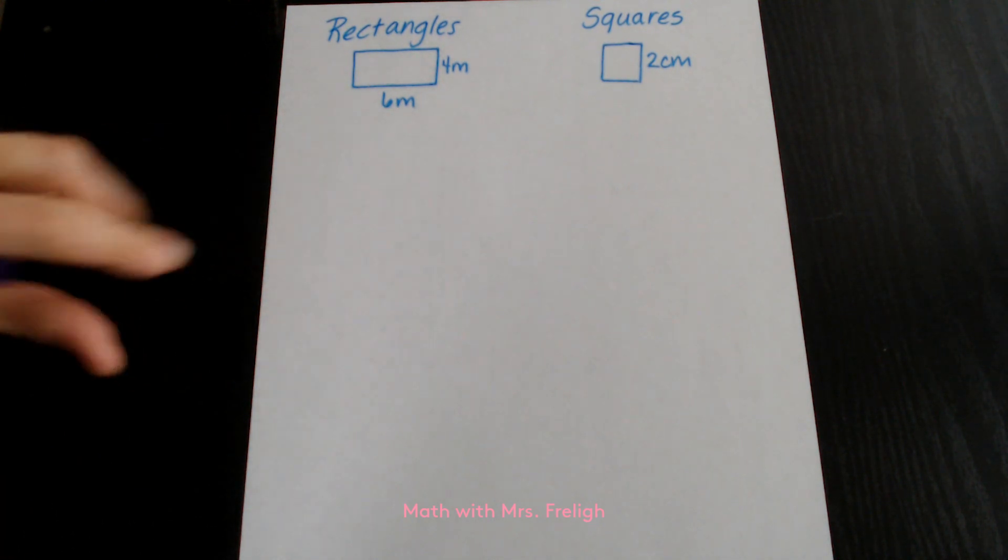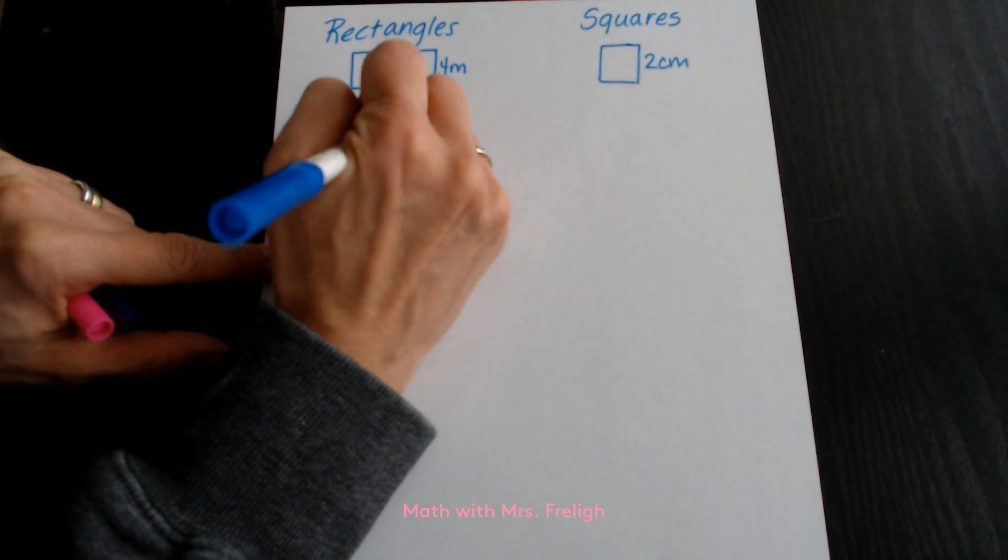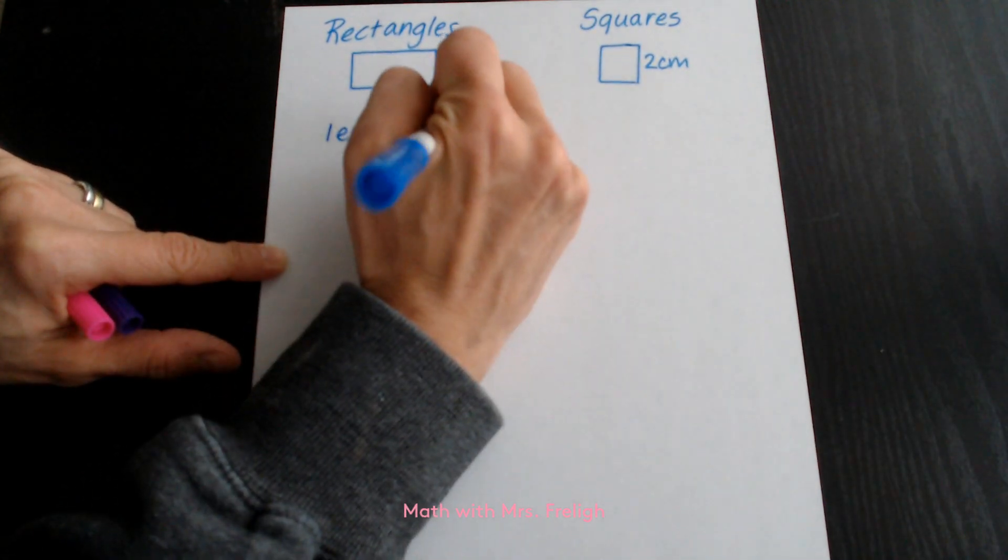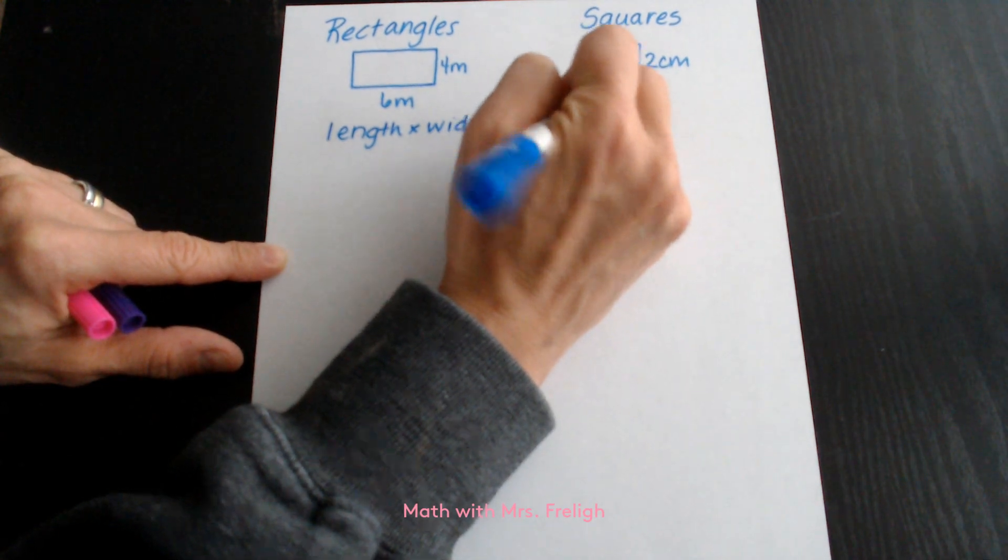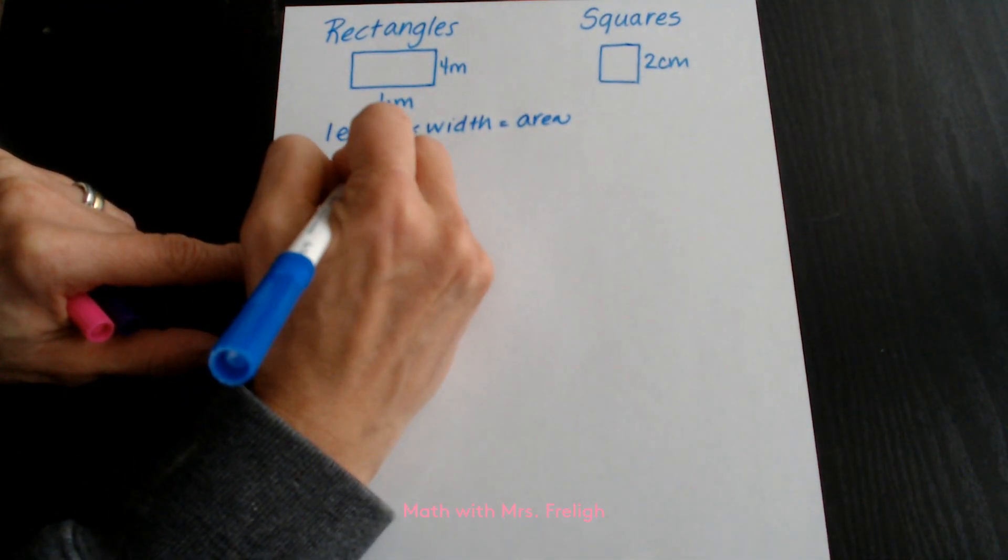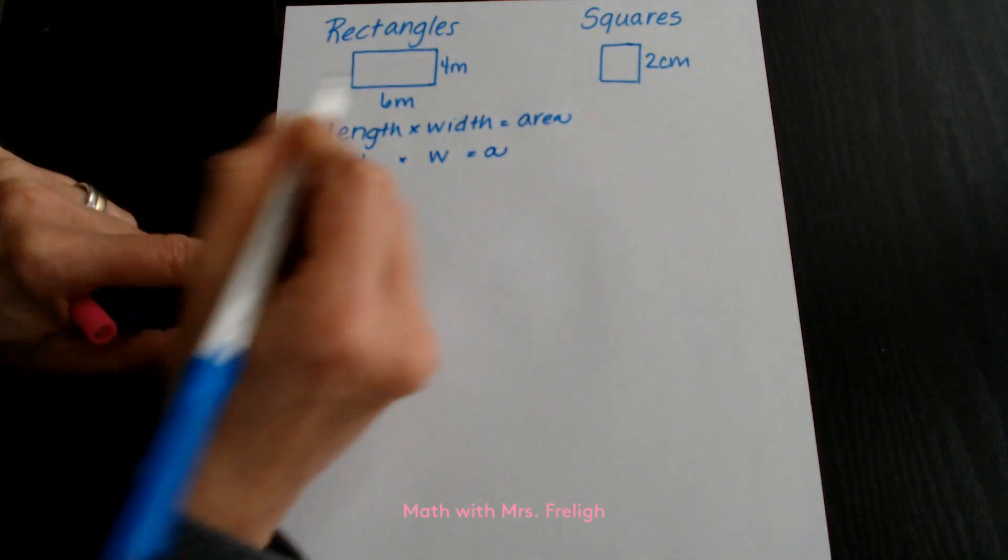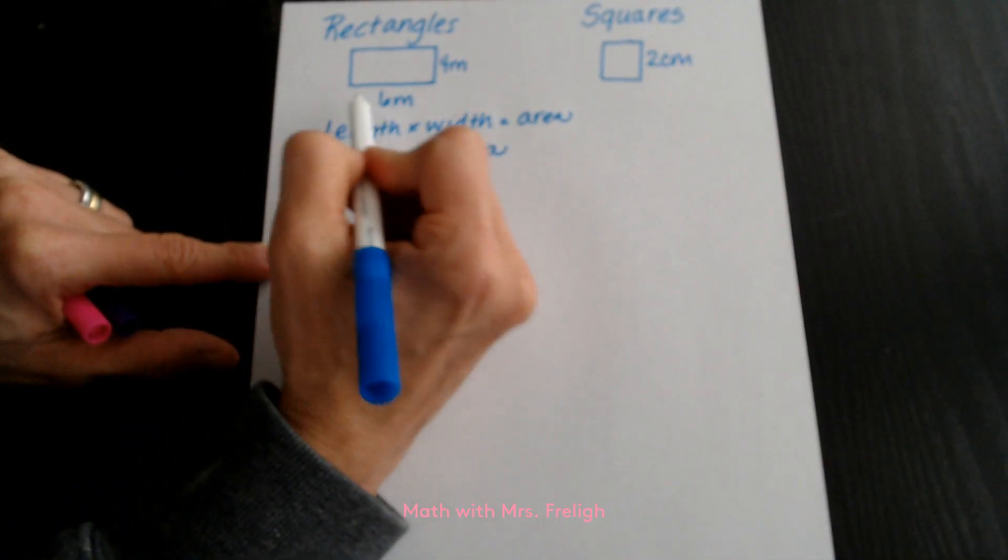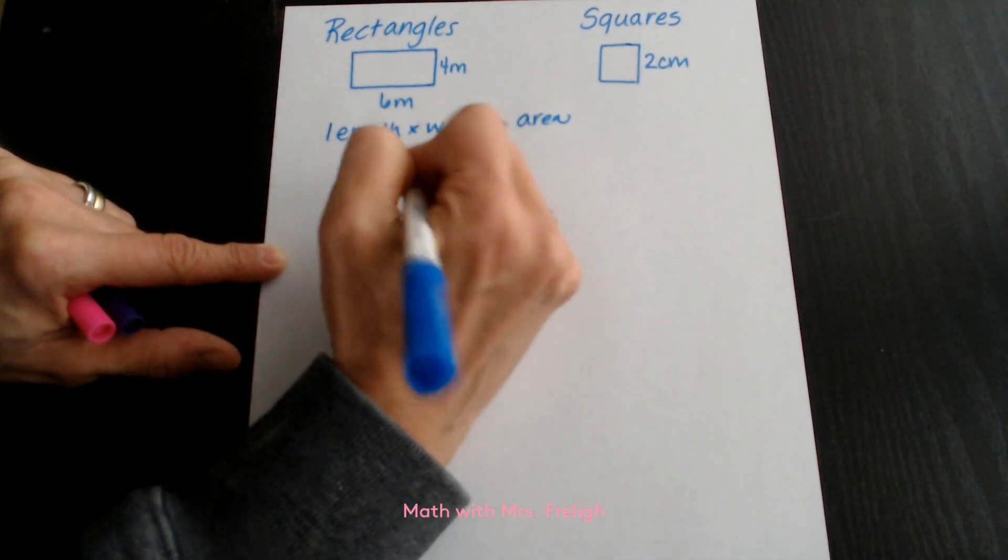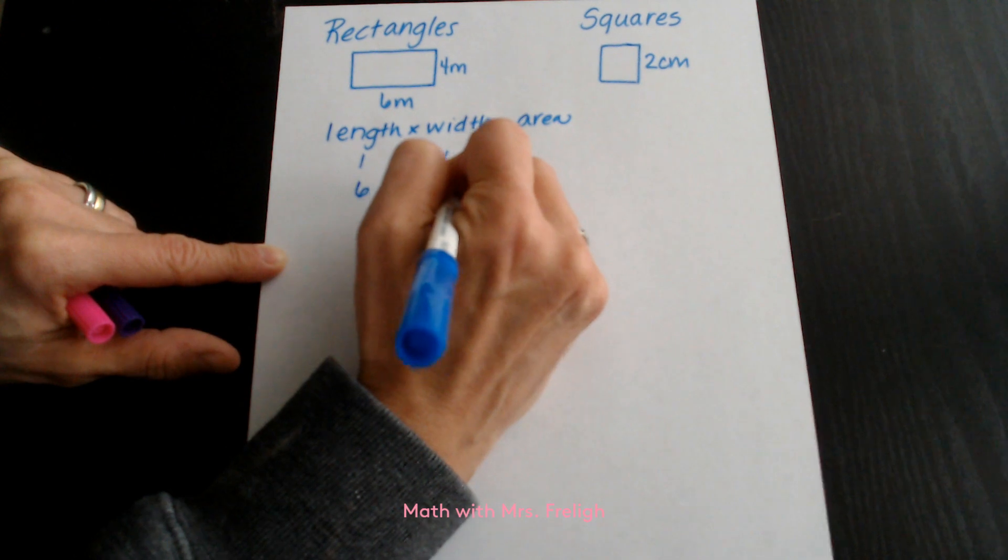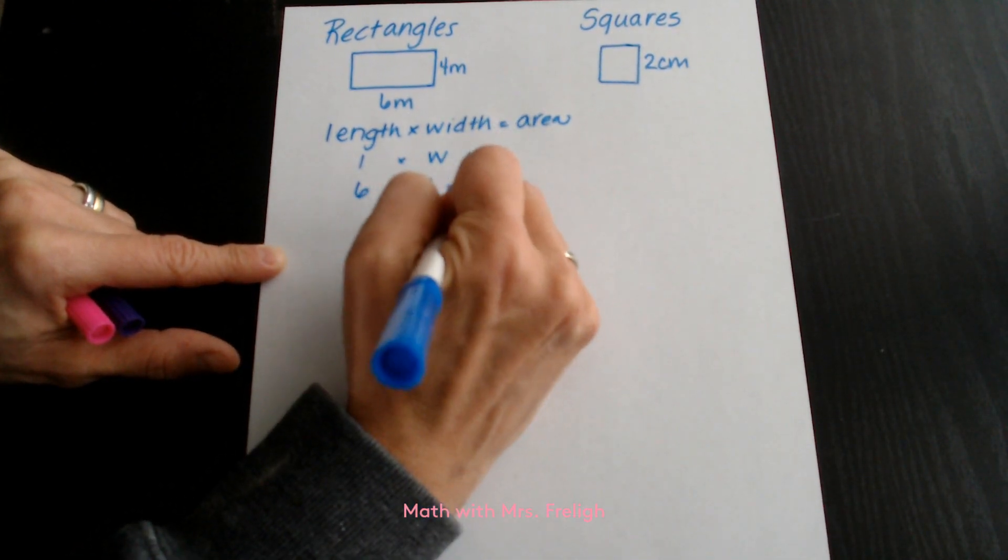Rectangles and squares we worked with before. We use the formula of length times width, which equals area. We abbreviate length with an L and width with a W, and area can be abbreviated with an A. If we look at this rectangle, we have the length of 6 meters and the width of 4. We would do 6 times 4, which would equal 24. Don't forget to give meters squared.